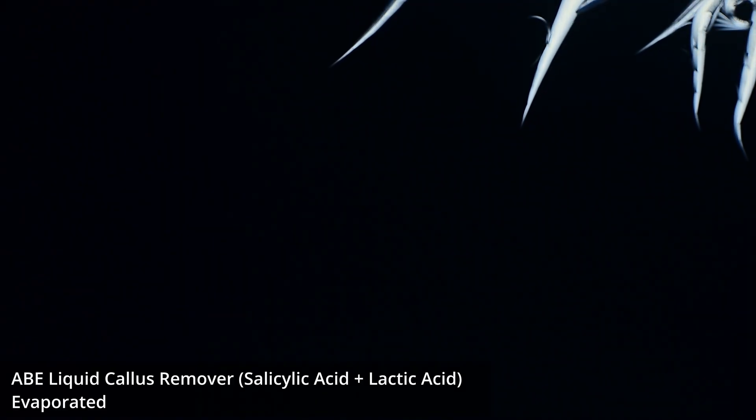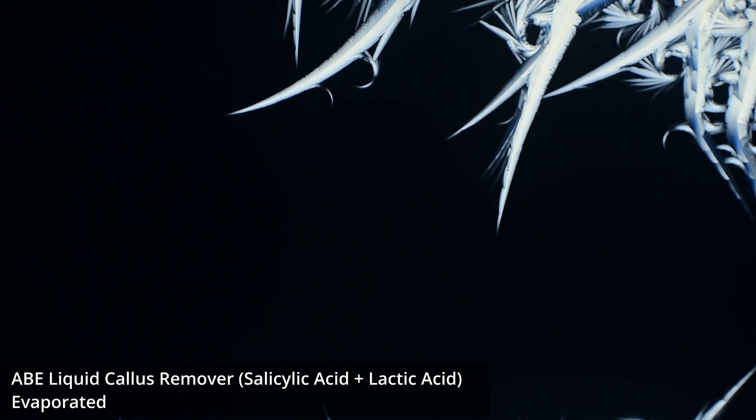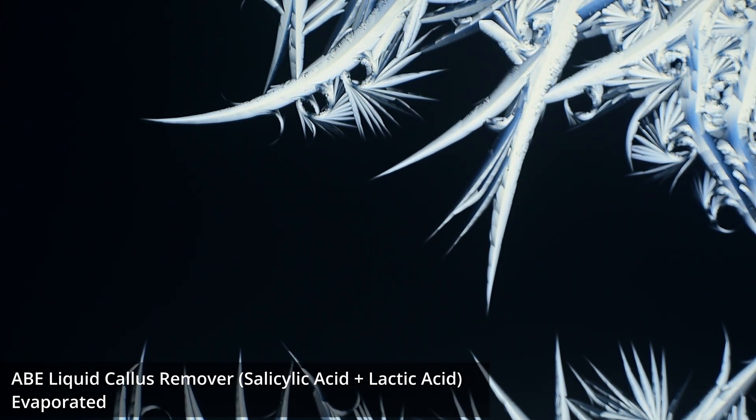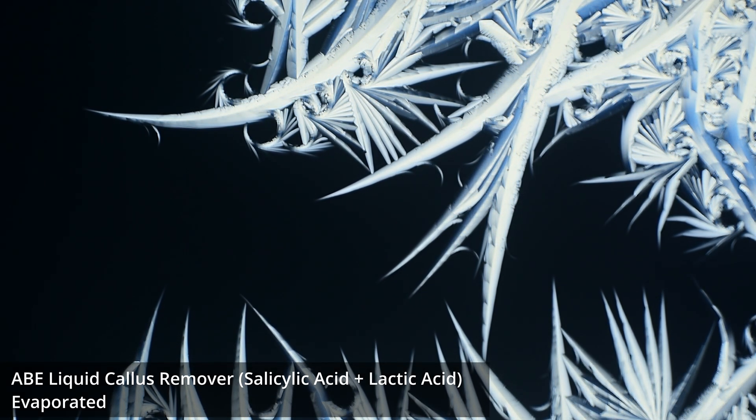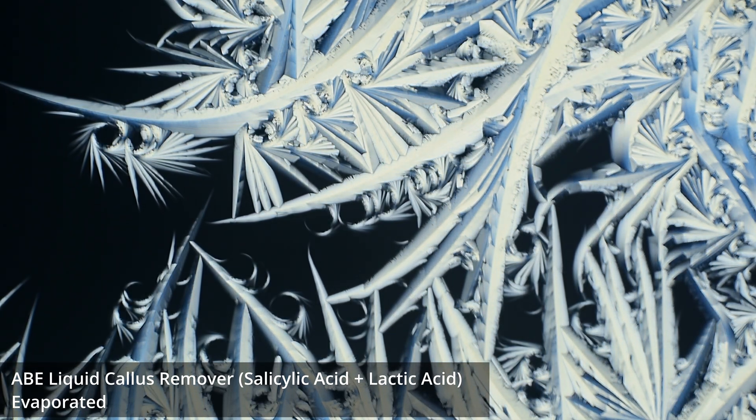Fast evaporation typically produces smaller, more disordered crystals, while slower evaporation allows time for larger crystals to grow at the expense of smaller ones, a process known as Ostwald ripening, resulting in clearer, more defined structures.